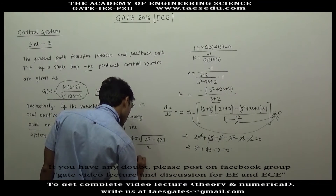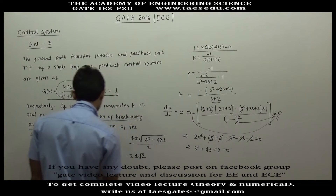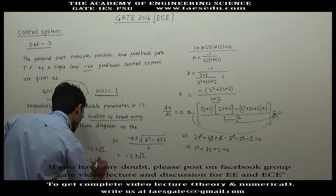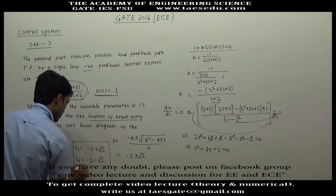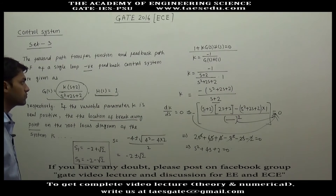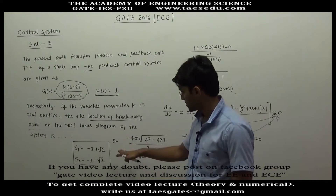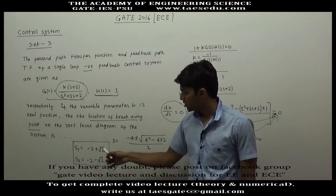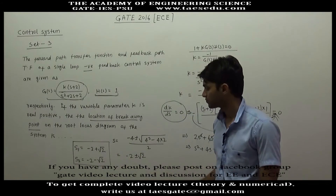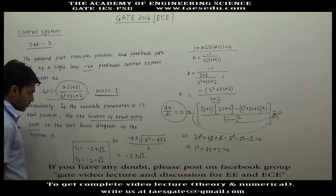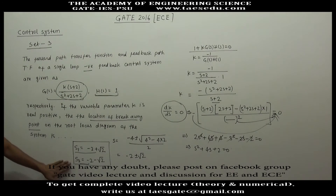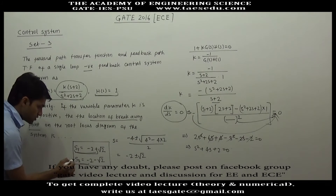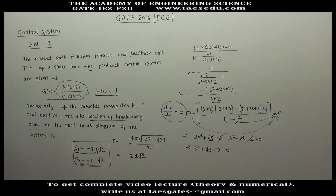Solving s² plus 4s plus 2 = 0 using the quadratic formula gives s = (-4 ± √8)/2 = -2 ± √2. So s₁ = -2 minus √2 and s₂ = -2 plus √2. In root locus theory, both values obtained by setting dk/ds = 0 are not necessarily breakaway points; we must check which one actually lies on the root locus.